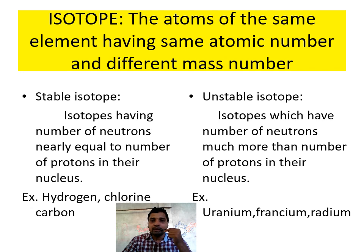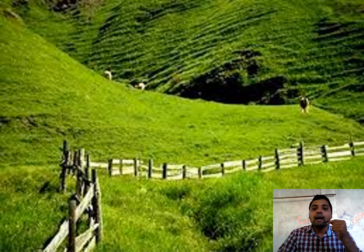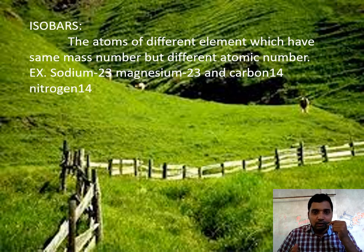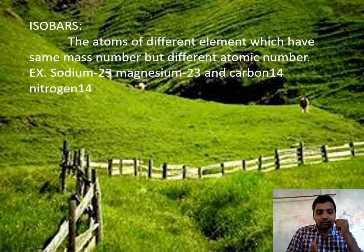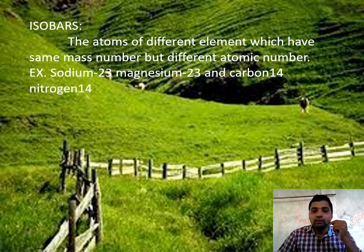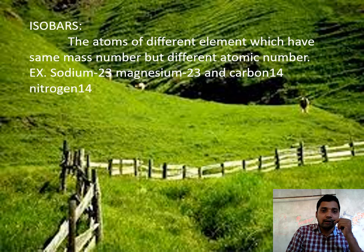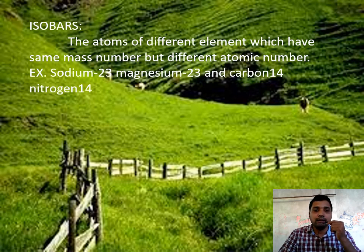Next is isobar. Isobar means atoms of different elements — whereas isotopes are in the same element, isobars are in different elements. Isobars have the same mass number but different atomic numbers, meaning the number of neutrons plus protons is the same but the number of protons is different. For example, sodium and magnesium both have different atomic numbers but the same mass number of 23. Carbon-14 and nitrogen-14 are another example — both have different atomic numbers but the same mass number 14.